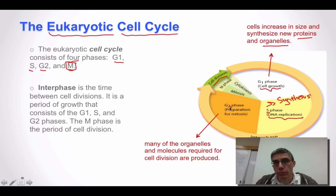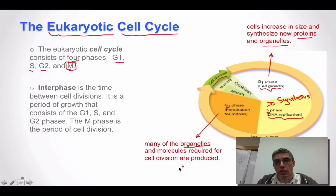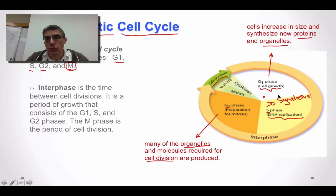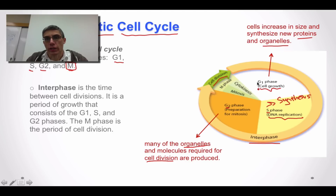The third part of the cell cycle is the G2 phase. If the DNA is replicated, the cell is preparing to divide, so we need to synthesize any organelles necessary to make sure that cell division occurs correctly. All of that happens in the G2 or GAP2 phase. G1, S, and G2 together make up the interphase portion of the cell cycle.